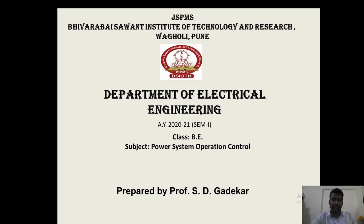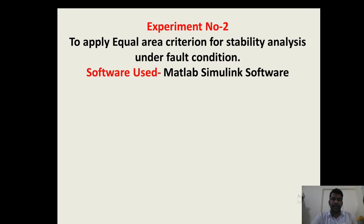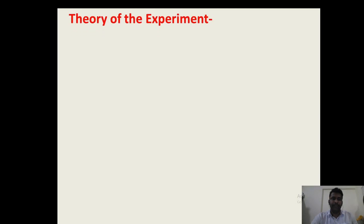Today, we are going to study experiment number 2 of Power System Operation Control. The title of the experiment is to apply equal area criteria for stability analysis under fault condition. For this experiment, we will require MATLAB Simulink software. Before we go into detail of the programming, we will study the theory behind the experiment.